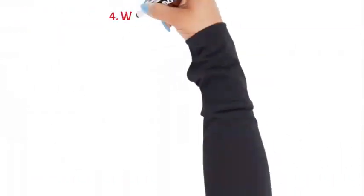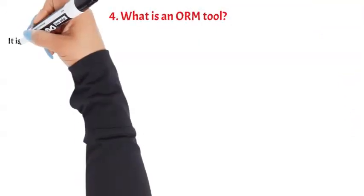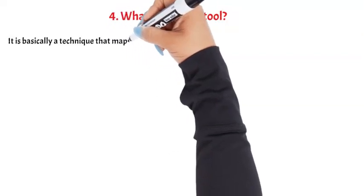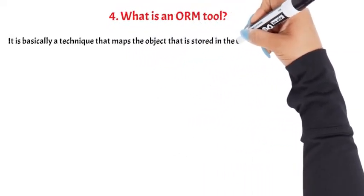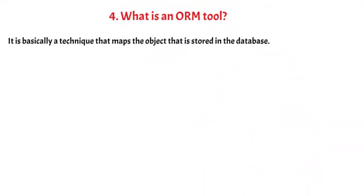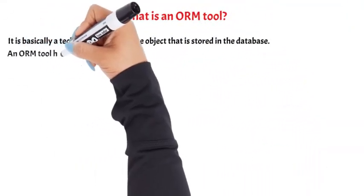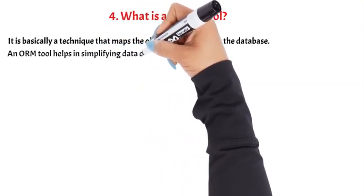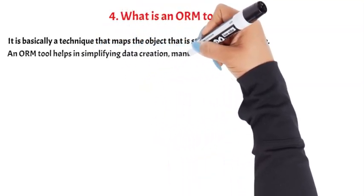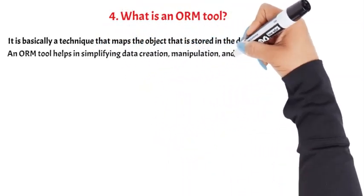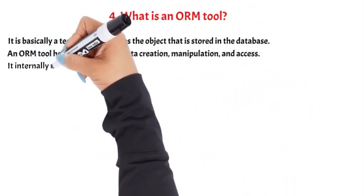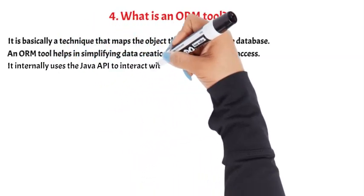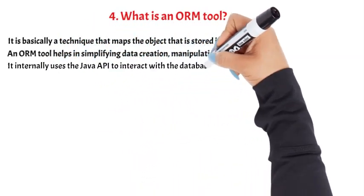Question 4: What is an ORM tool? It is basically a technique that maps the object that is stored in the database. An ORM tool helps in simplifying data creation, manipulation, and access. Internally, it uses the Java API to interact with the databases.